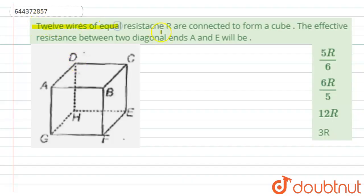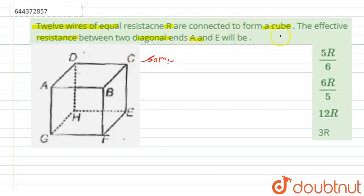Hello students. The question is: 12 wires of equal resistance are connected to form a cube. The effective resistance between the two diagonal ends A and E will be. Let's see the solution.